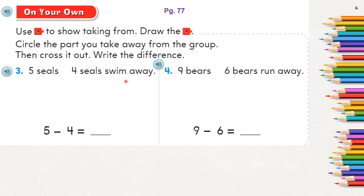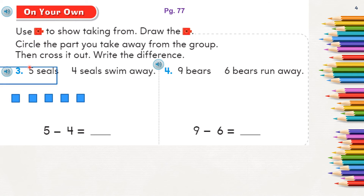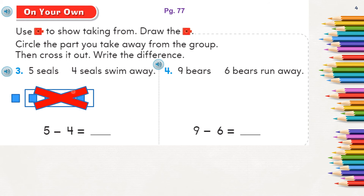Turn to page number 77. Third question: five seals, four seals swim away. Draw five counters: one, two, three, four, five. Four seals swim away, so put four in a box and cross them out. Count how many are remaining: one. Complete the subtraction sentence: five minus four equals one.